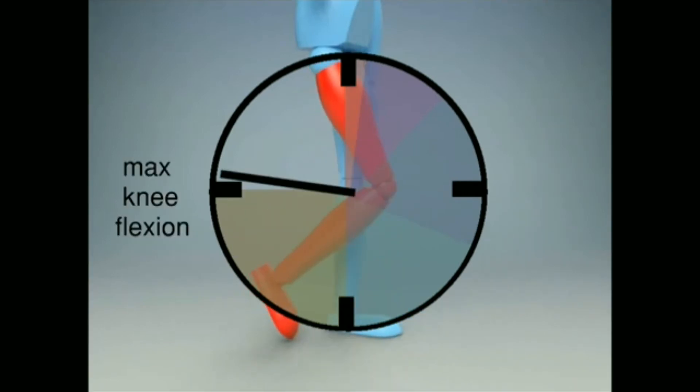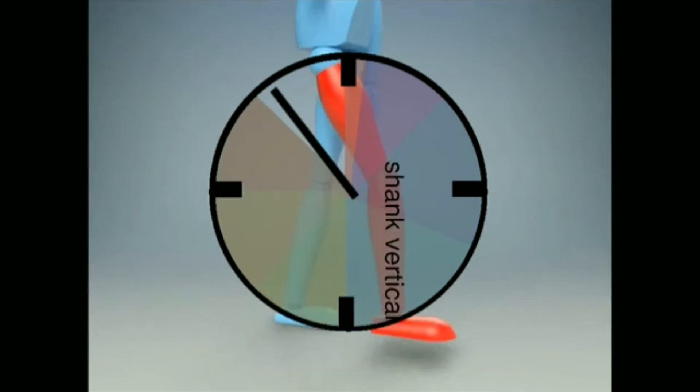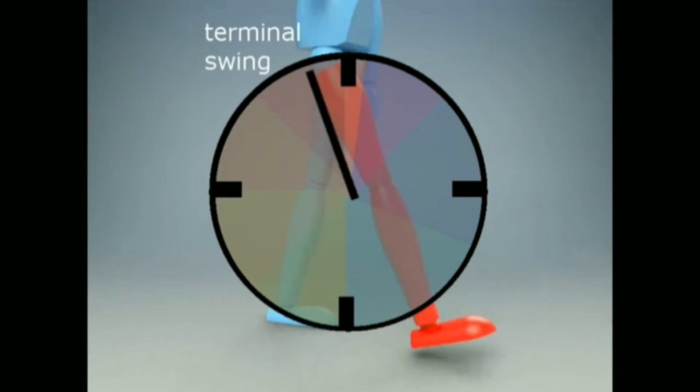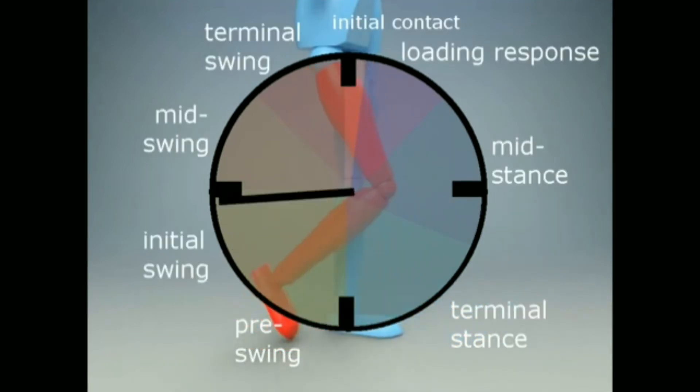Mid swing is 12 percent from then until the lower leg is vertical. Terminal swing is the remaining 13 percent of the cycle until the next contact, and the cycle goes again.